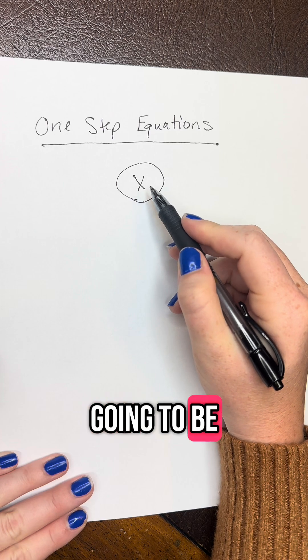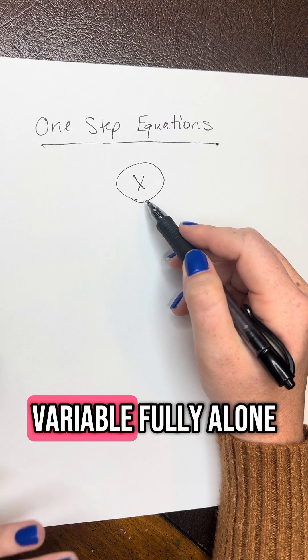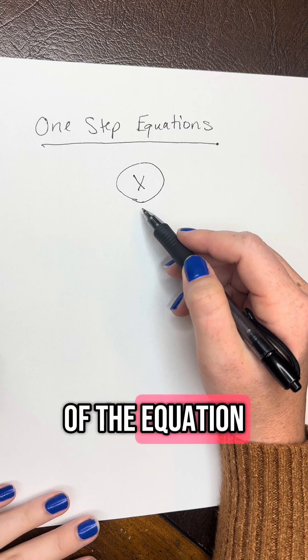This is often going to be the letter X in your problem, and you want to get that variable fully alone on one side of the equation.